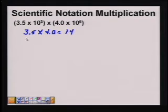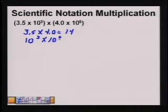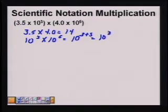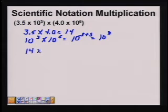Then we'll multiply the powers of 10 together. 10 to the third times 10 to the fifth is equal to 10 to the 3 plus 5. We add the exponents when the bases are the same and we're multiplying. That gives us 10 to the eighth. So our answer would be 14 times 10 to the eighth power.